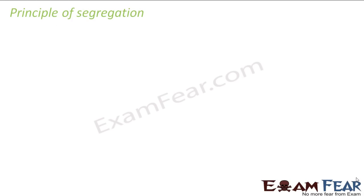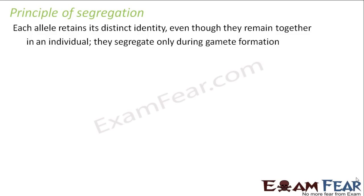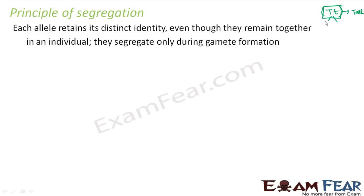The principle of segregation states that each allele retains its identity even though they remain together in an individual, and they segregate only during gamete formation. In a heterozygous tall plant (capital T, small t), both alleles remain together making the plant tall because capital T is dominant. But the hidden trait small t does not lose its identity — it still retains its identity. They separate out only during gamete formation when you cross-pollinate.